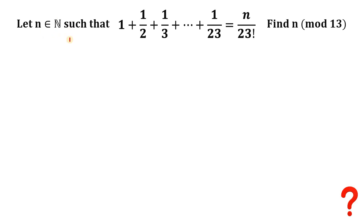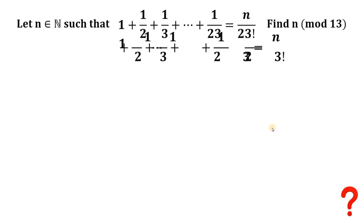Let n be a natural number such that 1 plus 1/2 plus 1/3 plus all the way down to 1/23 equals n over 23 factorial. Our goal is to find the remainder when n is divided by 13, or n mod 13. Let's visualize our question.